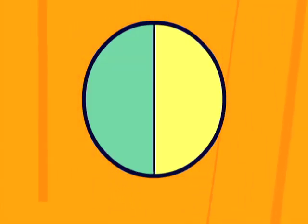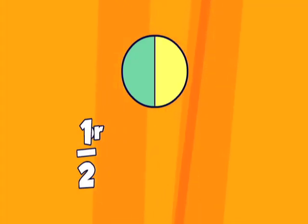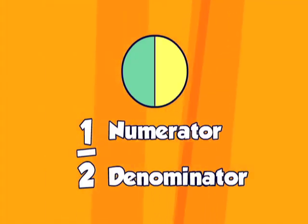A fraction is part of a whole. It has two parts. The top, which is called the numerator, and the bottom, which is called the denominator.